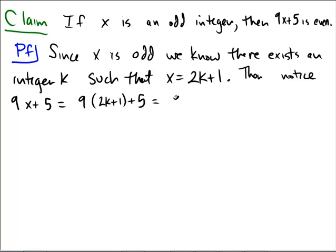This is equal to 18k plus 14 by distributive property and collecting the constants. And this is equal to 2 times 9k plus 7 by factoring out the common 2.